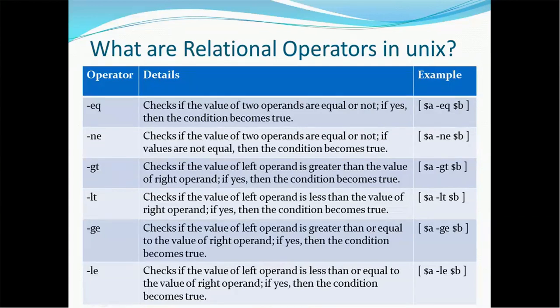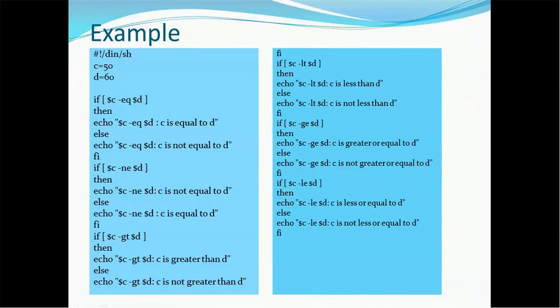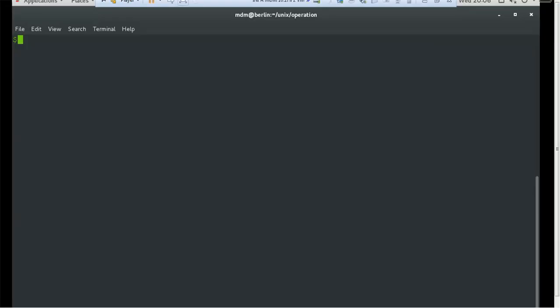On the right-hand side we have captured an example. You have to use an opening square bracket, then a space, the input variable, a space, hyphen-eq, space, dollar b — where b stands for the second variable — then a closing square bracket. Here is a sample example and we'll see it in detail in the demo. Let's start the demo on this topic.